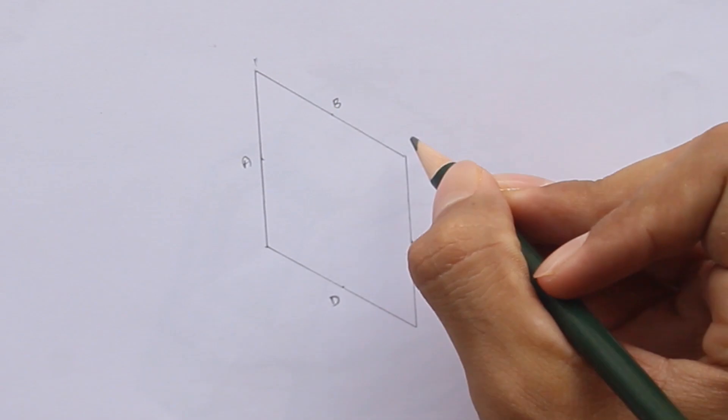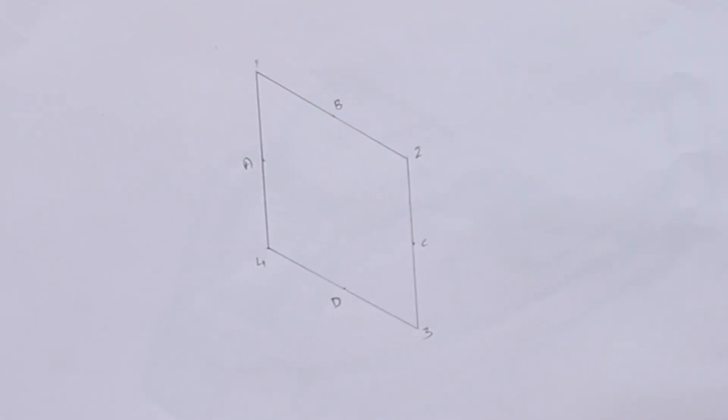As you can observe, I will label 1, 2, 3, and 4 for the edges of the rhombus and A, B, C, and D for the midpoints of the rhombus. After finishing with this step,